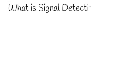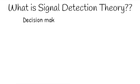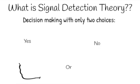Basically, all signal detection theory is is trying to understand how we come to make a decision when there's only two possible decisions to make.